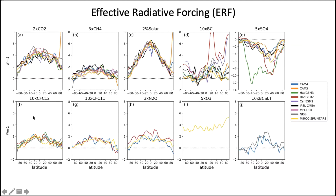Looking at the zonal mean ERF from all different climate perturbations, for greenhouse gases such as CO₂, methane, and CFCs, we see larger ERF in the tropics and smaller at higher latitudes — a similar latitudinal pattern because they share the same greenhouse gas mechanisms. However, for aerosol forcing agents such as black carbon and sulfate, we see larger forcing in the northern hemisphere.